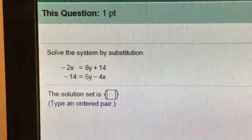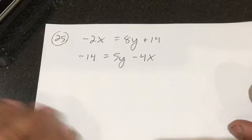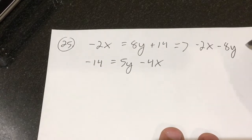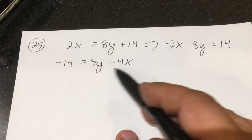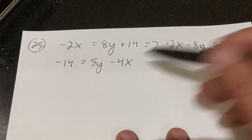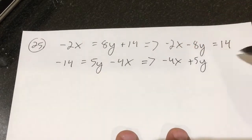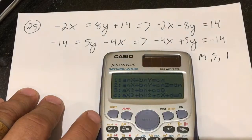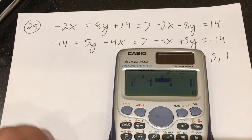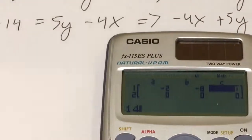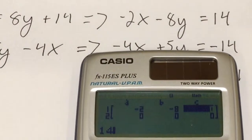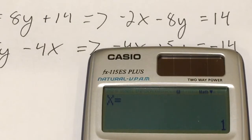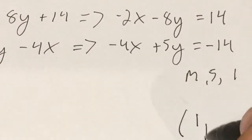Notice it's not in the proper format. If you just type it in like it looks, the computer will mark it wrong. I have to rewrite both of these in standard form. For the first one, I'm going to subtract 8y from both sides, giving me negative 2x minus 8y equals 14. For this one, I flip it around the equal sign: negative 4x plus 5y equals negative 14. Now I can use mode 5, 1 and type in coefficients negative 2, negative 8, 14, then negative 4, 5, negative 14. Answer: 1, negative 2 as a coordinate.